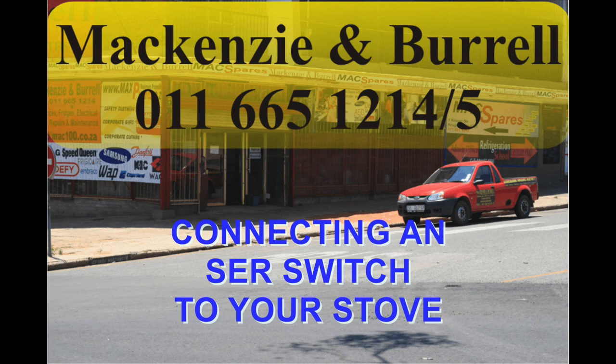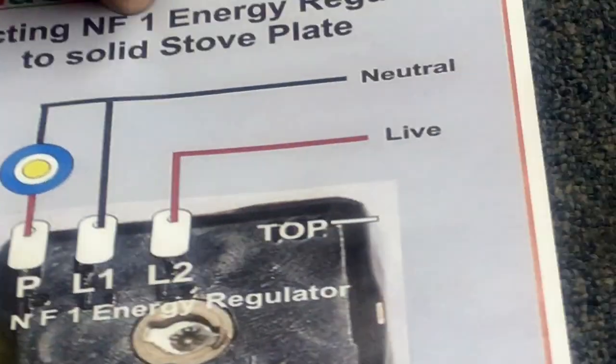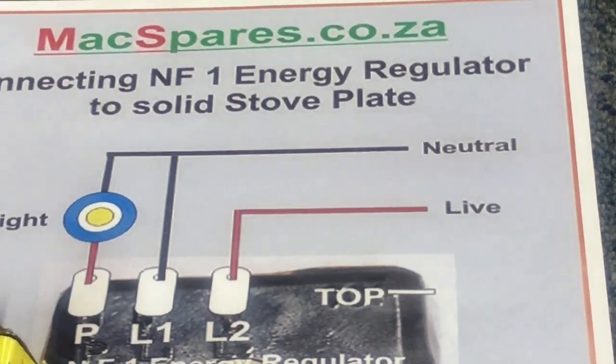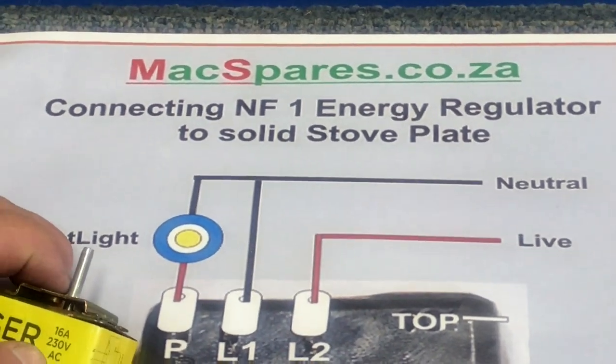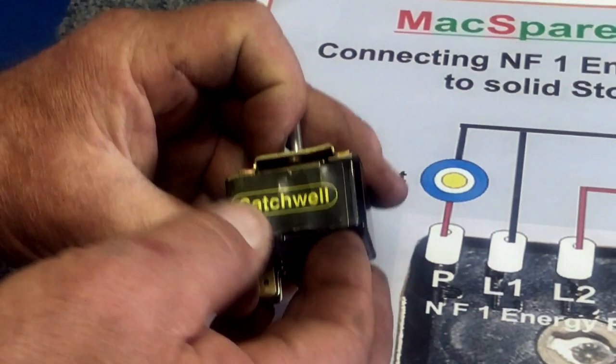Today we're talking about connecting up an SCR switch onto your stove. SCR is sometimes called NF1. NF1 is a very old terminology. It comes out marked as SCR. This switch is made by Satchel.